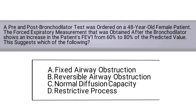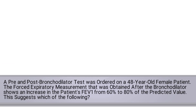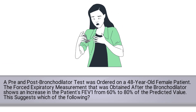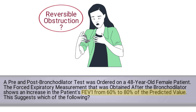The information given in the question suggests that the patient's airway obstruction was somewhat relieved after the bronchodilator was given. We know this because their FEV1 increased from 60 to 80 percent of the predicted value. But was the increase enough to classify as a reversible obstruction?